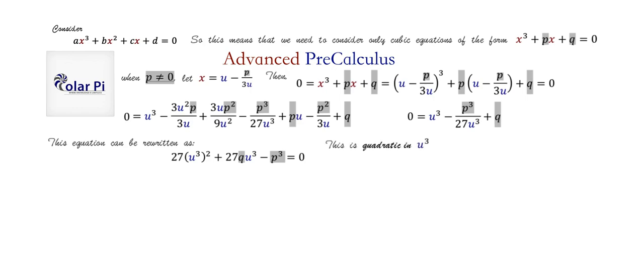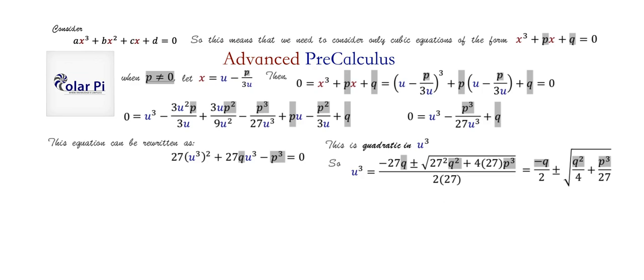We can use the quadratic formula to solve for a, meaning solve for u³. Applying it, we get this expression. Simplifying — for example, -27q over 2×27 reduces to -q/2 — we can write u³ in this cleaner form.